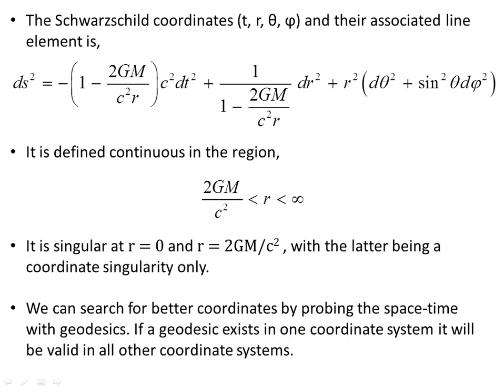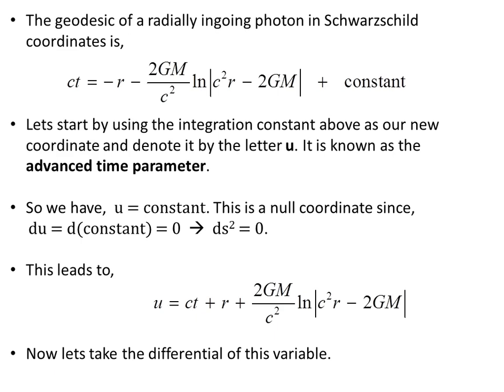We can search for better coordinates by probing the spacetime with geodesics. If a geodesic exists in one coordinate system, it will be valid in all other coordinate systems. The geodesic of a radially ingoing photon in Schwarzschild coordinates is this expression here, found in a previous video in the series on Schwarzschild geodesics.